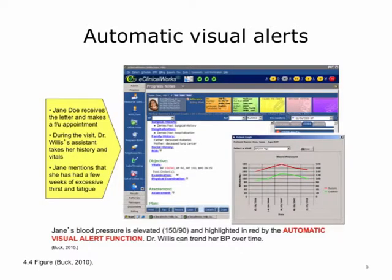Jane Doe receives the letter and makes the follow-up appointment. During the visit, Dr. Willis' assistant takes her history and vitals. Jane mentions that she has had a few weeks of excessive thirst and fatigue, which is all documented in her clinical note. Her blood pressure is elevated at 150 over 90 and shows up in red — the EHR is already alerting the provider with a color change that this patient may need additional follow-up care. The system also provides trending over time, so the doctor can see that her blood pressure has consistently been out of a good range across multiple visits.